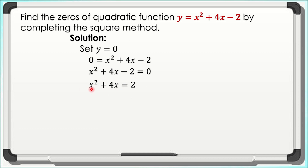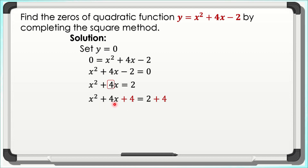To make this a perfect square binomial, we take half of positive 4 and square the answer. So 4 ÷ 2 = 2, and 2² = 4. We add 4 to both sides, giving x² + 4x + 4 = 2 + 4. We simplify the right side and write the left side as a perfect square binomial: (x + 2)² = 6.